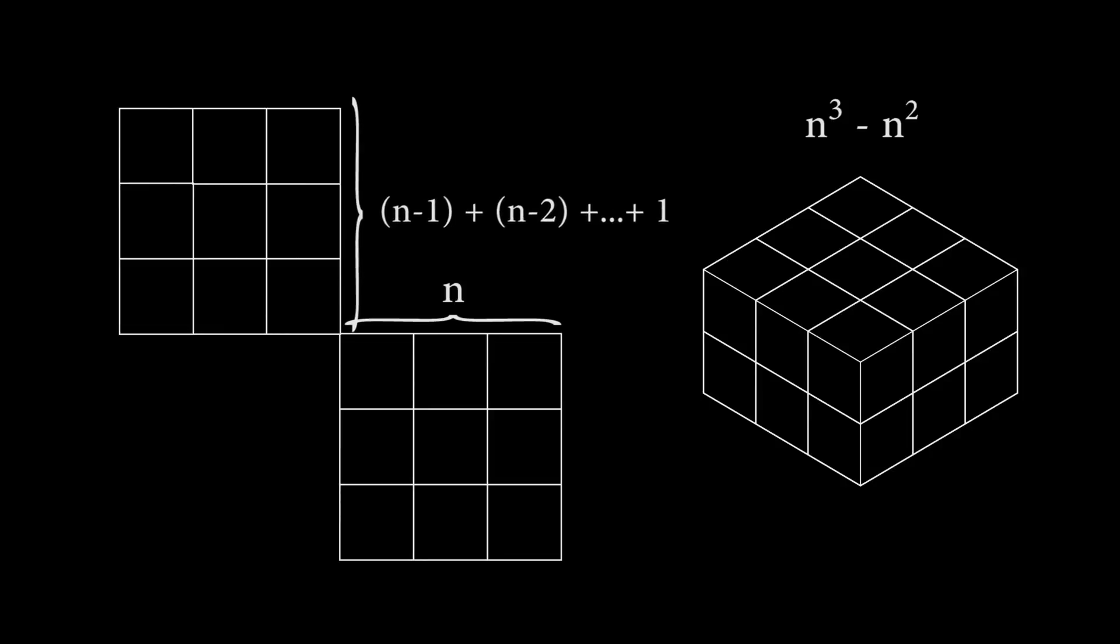Hmm, referring to the n minus 1th triangle number like this as a summation, while accurate, isn't very helpful for this situation. Let's see if we can find a formula to replace it.